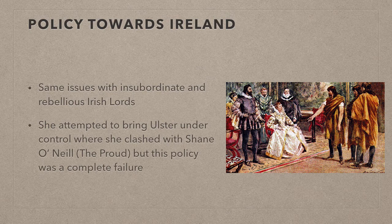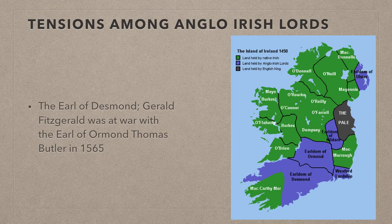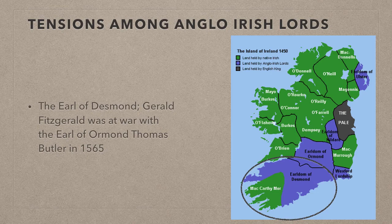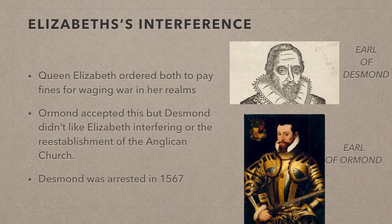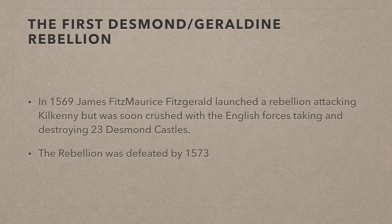In the south of the country, the Earl of Desmond Fitzgerald, who had large tracts of land around Cork, Limerick, Kerry, Tipperary and Waterford, was at war with the Earl of Ormond, Thomas Butler, who had his lands around Kilkenny — this was in the year 1565. Both were summoned to England, fined for waging war in Elizabeth's realm, and promised not to do so again. The Earl of Ormond kept his word, but the Earl of Desmond disliked Elizabeth's interference in his affairs and was also unhappy at the re-establishment of the Protestant church. His consistent insubordination led to his arrest in 1567. In protest, his family launched a rebellion led by James Fitzmaurice Fitzgerald against the Queen, attacking Kilkenny. This rebellion is known as the Geraldine Rebellion or the Desmond Rebellion.